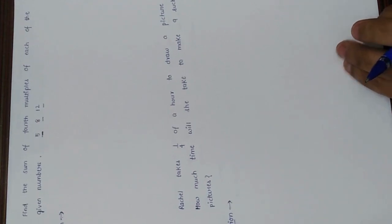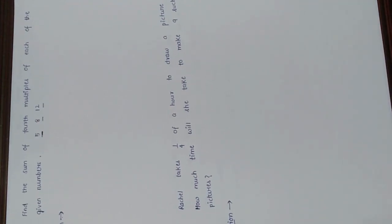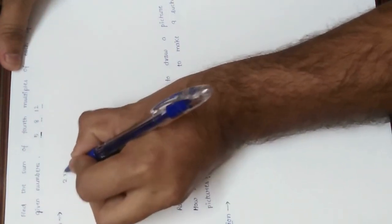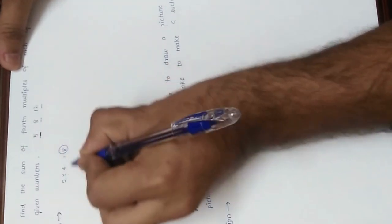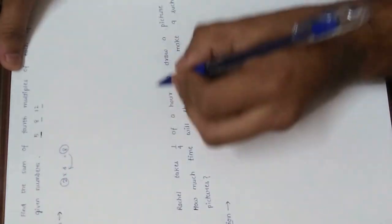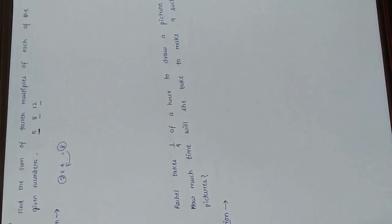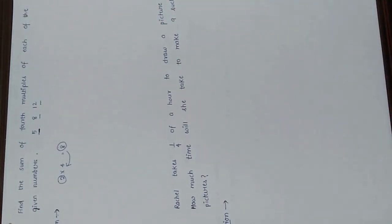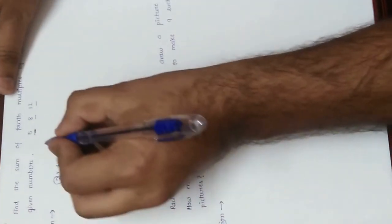We are given three numbers: 5, 8, and 12. Multiples are what we get when we multiply a given number by a counting number. For example, 2 multiplied by 4 gives 8, so 8 is the fourth multiple of 2. There is also the concept of factors, where we divide a bigger number into its dividing factors.